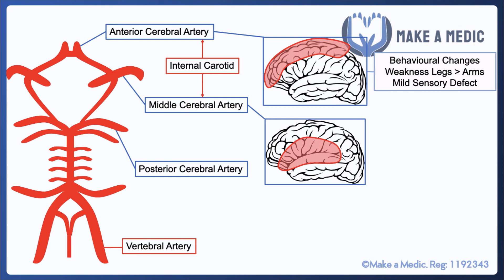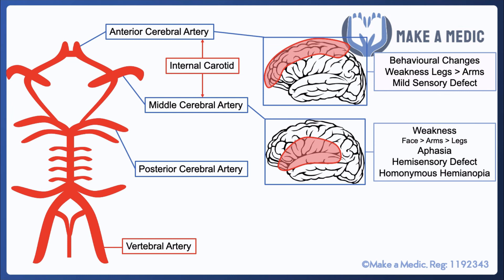The middle cerebral artery provides blood supply to parts of the frontal lobe, the parietal lobe, and the temporal lobe. This will result in some weakness as well because it involves the primary motor cortex, but per the motor homunculus it'll affect the face and the arms more than the legs. This area also includes Broca's and Wernicke's areas, so patients are also likely to develop aphasia. As it affects the primary sensory cortex there'll be a hemi-sensory defect, and it's also likely to affect parts of the optic pathway going towards the occipital lobe, resulting in a homonymous hemi-anopia.